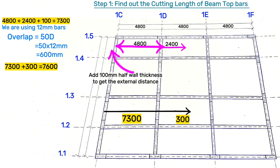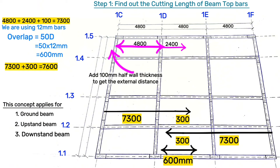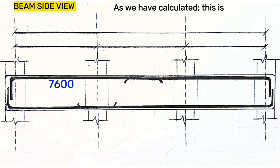Since we agreed to overlap top bars from the center of the beam at L divided by 2, and we have worked on one side, the other side will also be 7.3 meters. Add an extra 300 millimeters for the overlap from the other side to make the total overlap 600 millimeters. That's how you find the cutting length for top bars in beams. This concept applies for ground beams, upstand beams, downstand beams, and slab beams. So we have 7.6 meters on each side with an overlap of 600 millimeters.